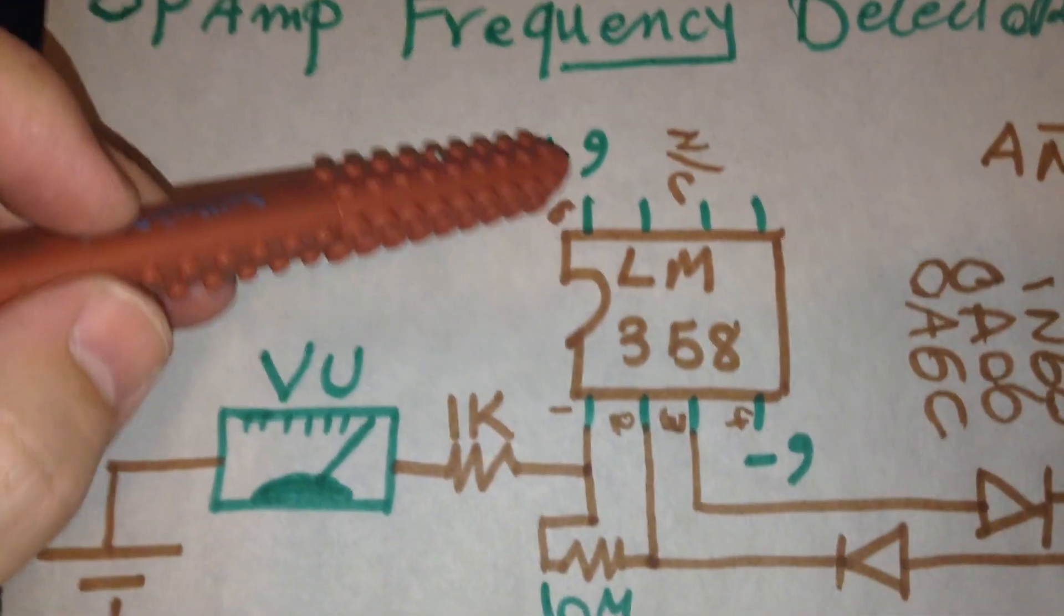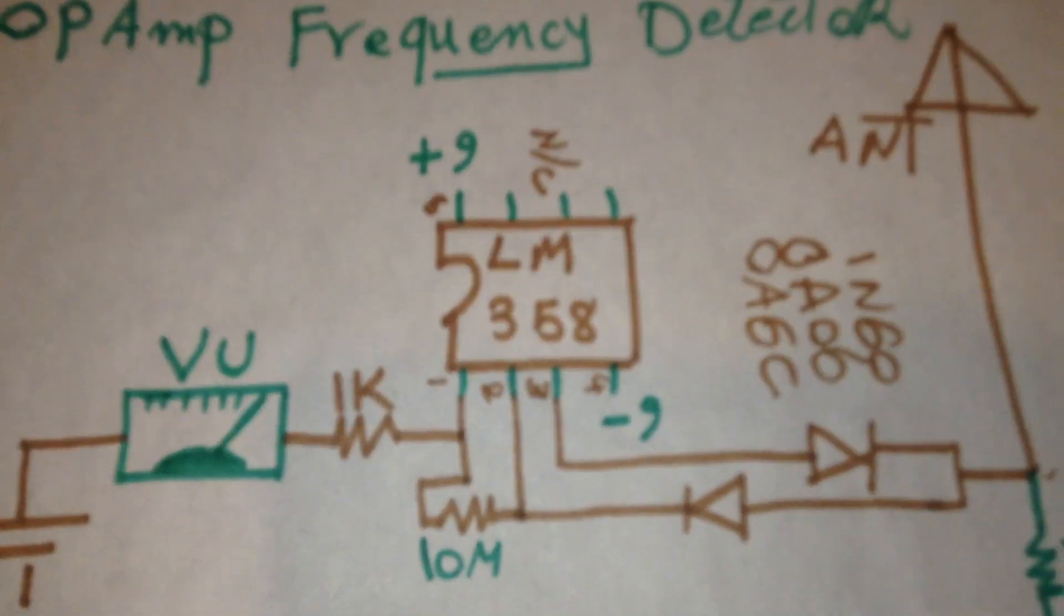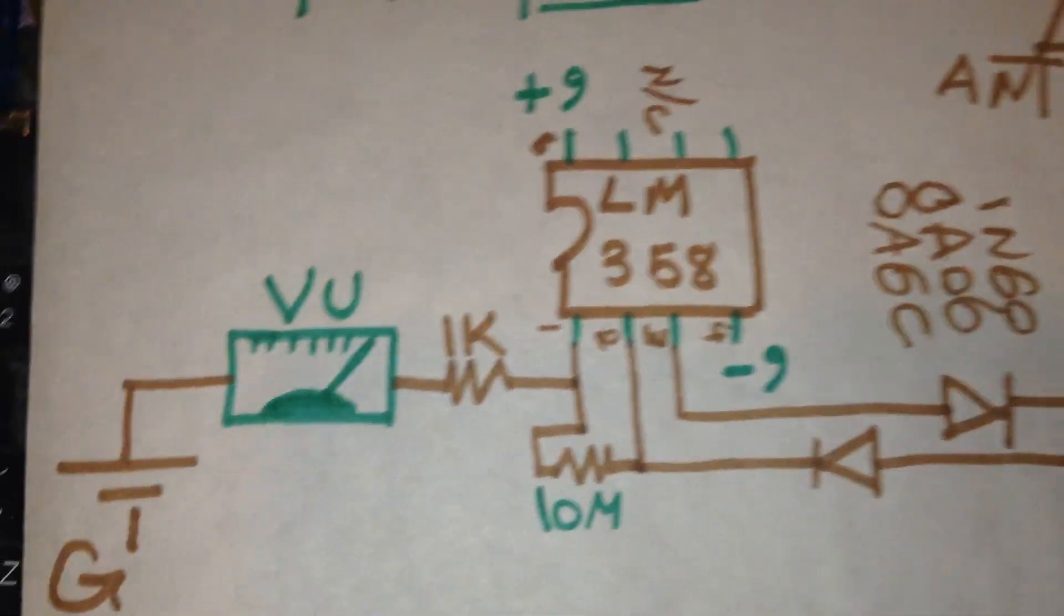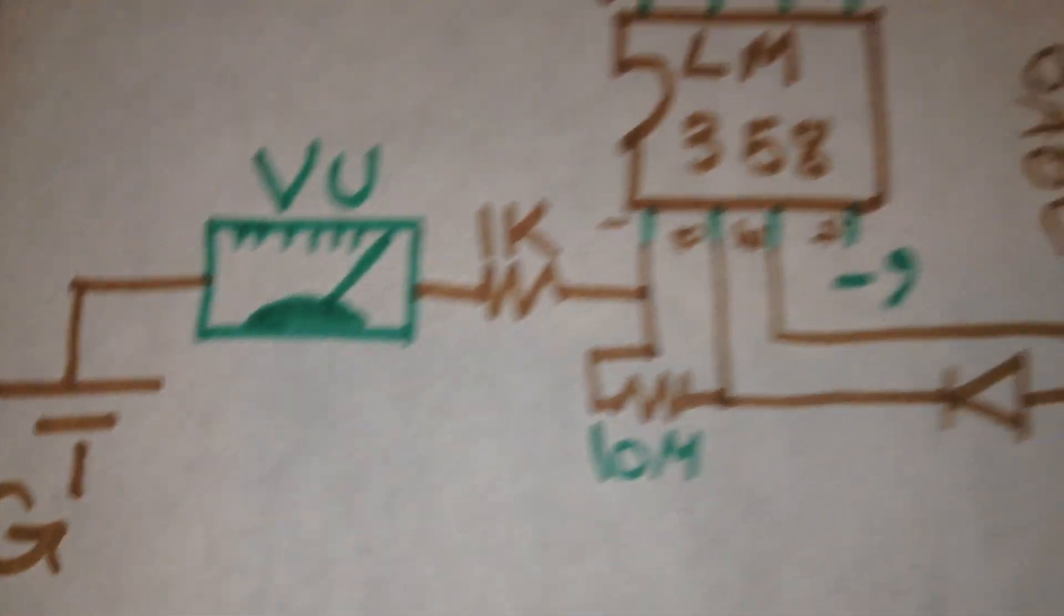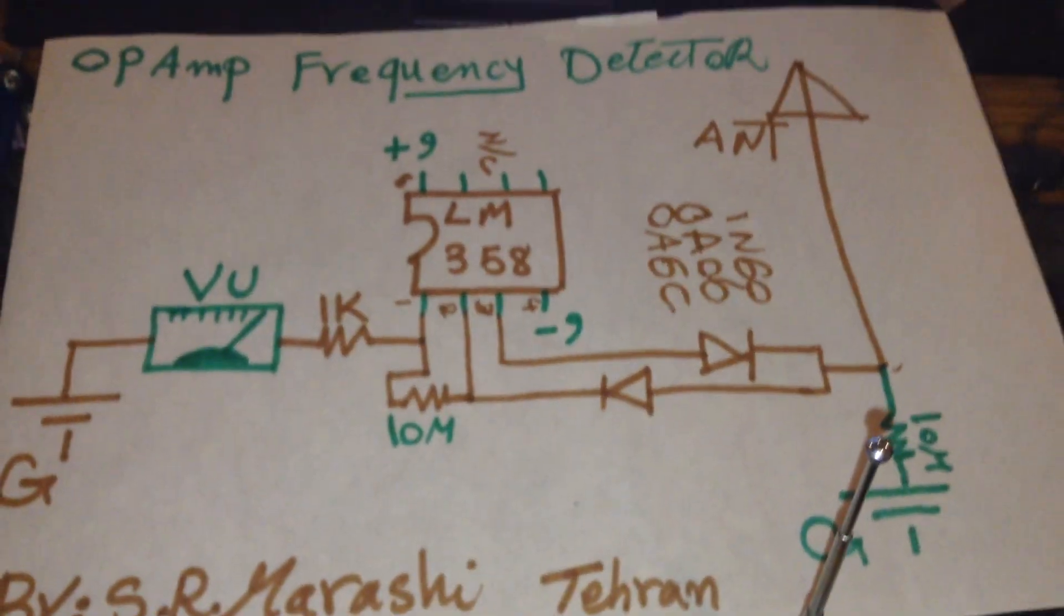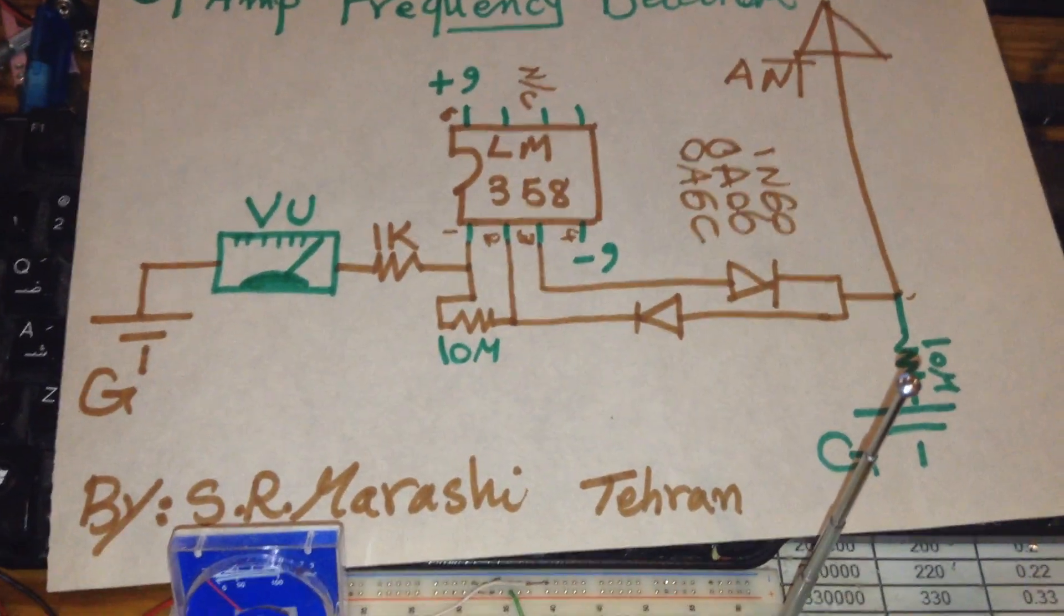Of course, pin number 8 and number 4 are connected to the positive and negative 9 volt, and the VU meter, analog VU meter, over 1k connected to the ground. That's it. This project can detect the frequency from 100 megahertz up to 2.4 gigahertz.